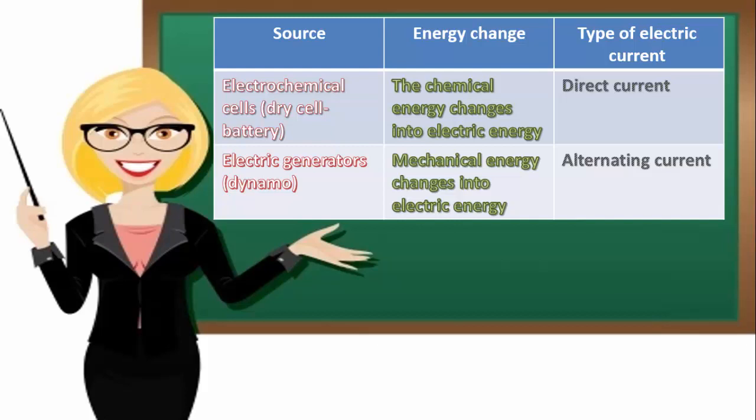Dynamo: the electric current produced is known as alternating current. Sources include electrochemical cells, battery or dry cells, electric generator, and dynamo.